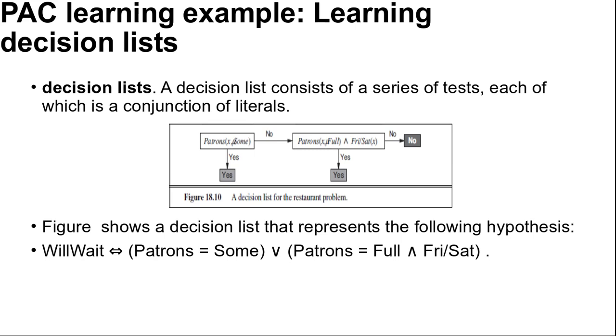Figure A, B, C shows the decision list that represents the following hypothesis: WillWait if and only if Patrons equals Some, or Patrons equals Full and Friday or Saturday.